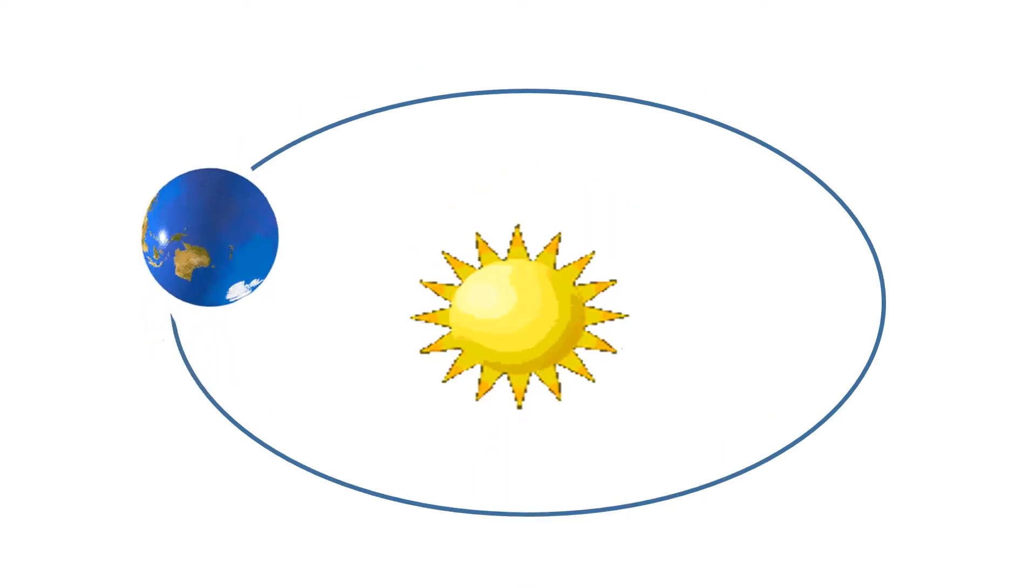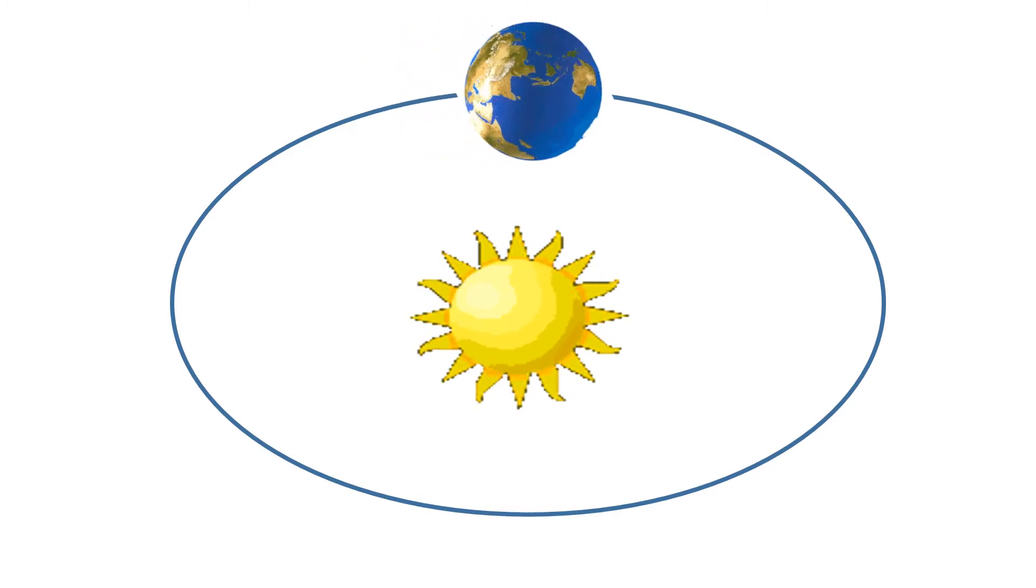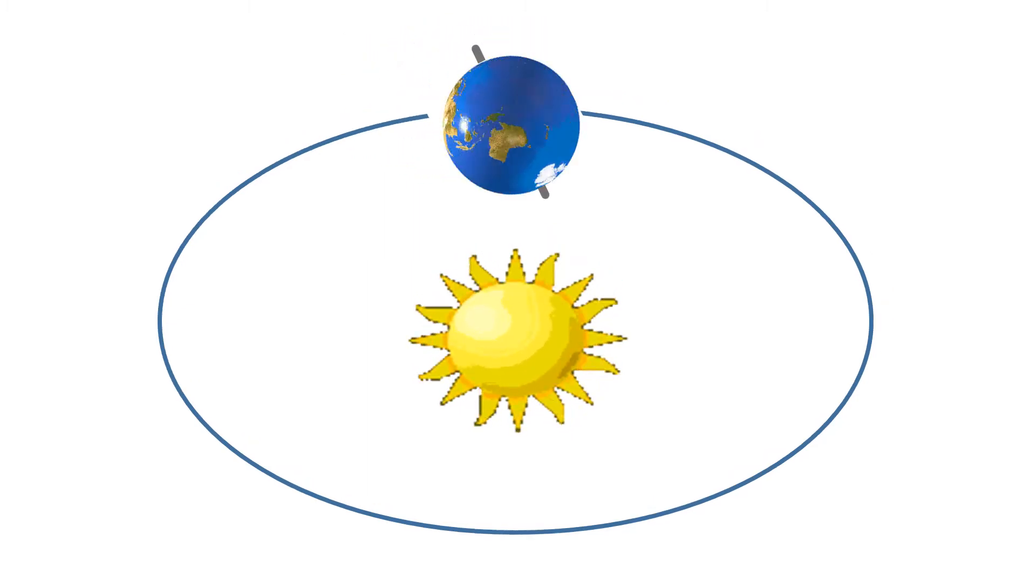When the Earth is here Sun shines equally on both the northern and southern hemisphere. The length of day and night are the same. It is spring in northern hemisphere and autumn in southern hemisphere.